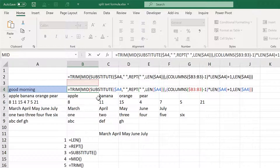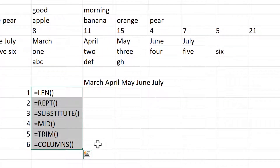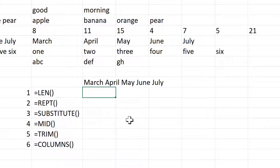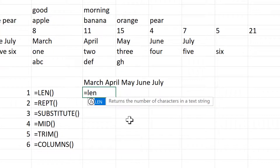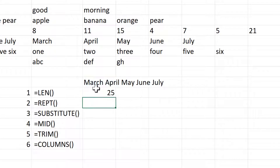This formula is actually six formulas combined together, so I'll start by explaining each of them individually and then combine them all together. The LEN formula will tell you the length of a text string, or the number of characters in a text string. So if I select this cell here, it will tell me that it is 25 characters long.